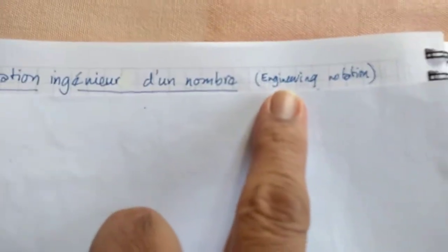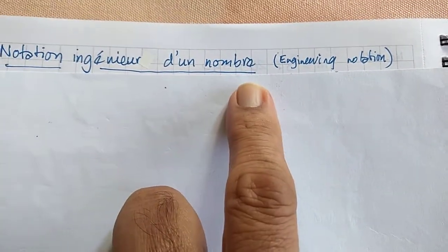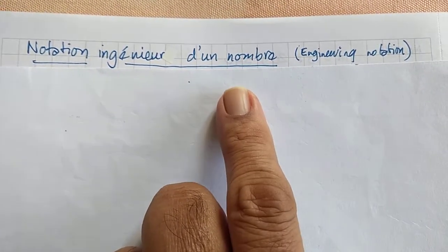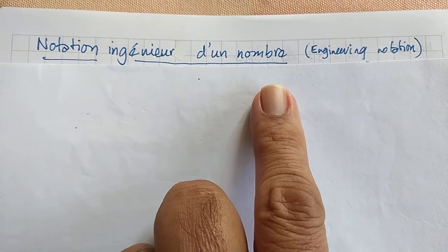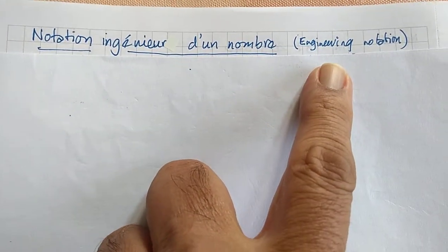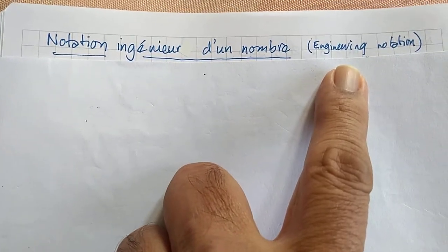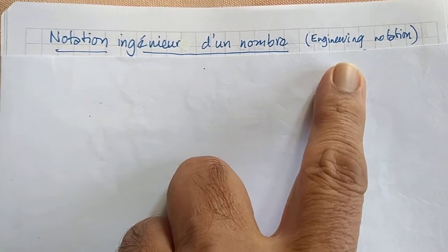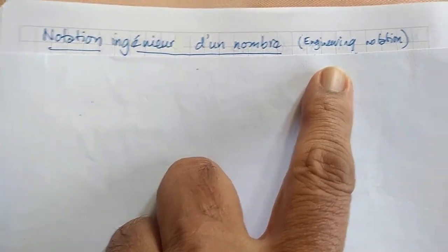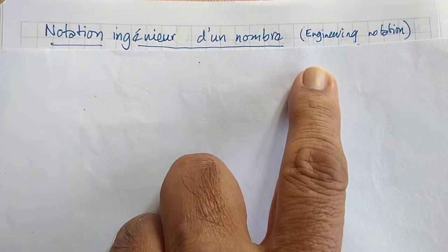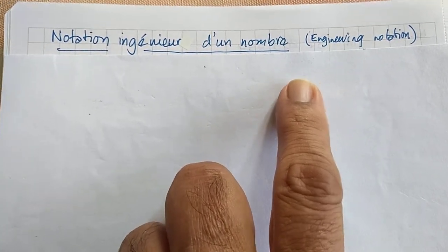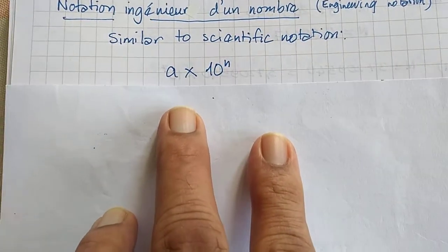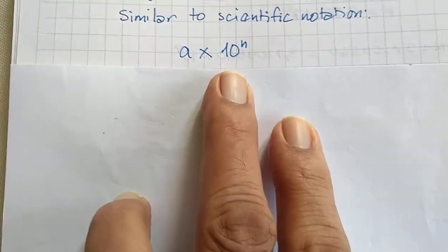So what is engineering notation of a number? It is very similar to scientific notation — it is a way of writing a number. And for each number, just like there is only one way you can write it in scientific notation, there is only one way you can write it in engineering notation. It takes this form: a into 10 to the power n.